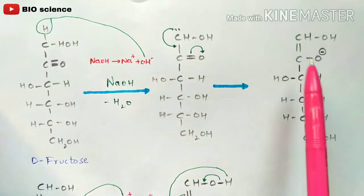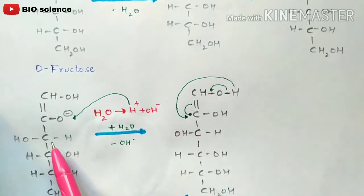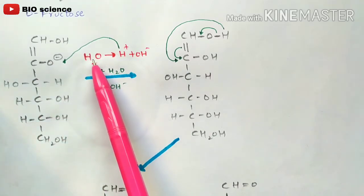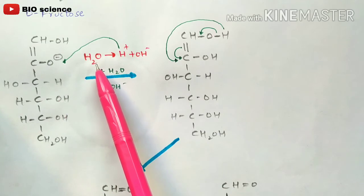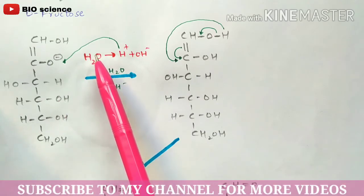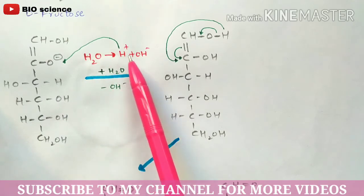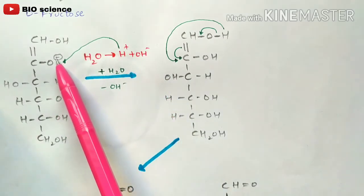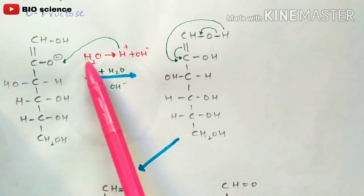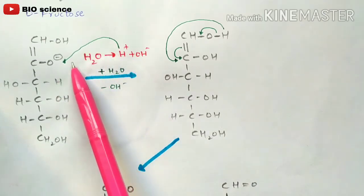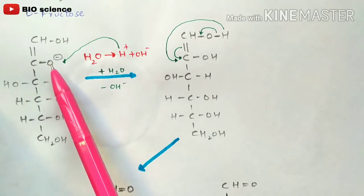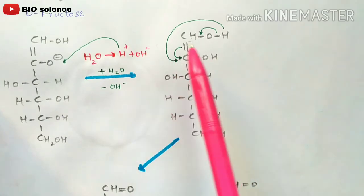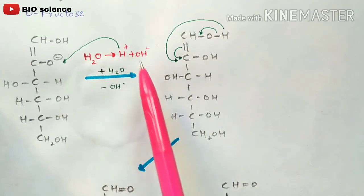This intermediate ion then reacts with water. Water dissociates as H₂O → H⁺ + OH⁻. The H⁺ proton interacts with the O⁻ ion present in the intermediate structure, forming an OH group. This gives the next structure in the mechanism.